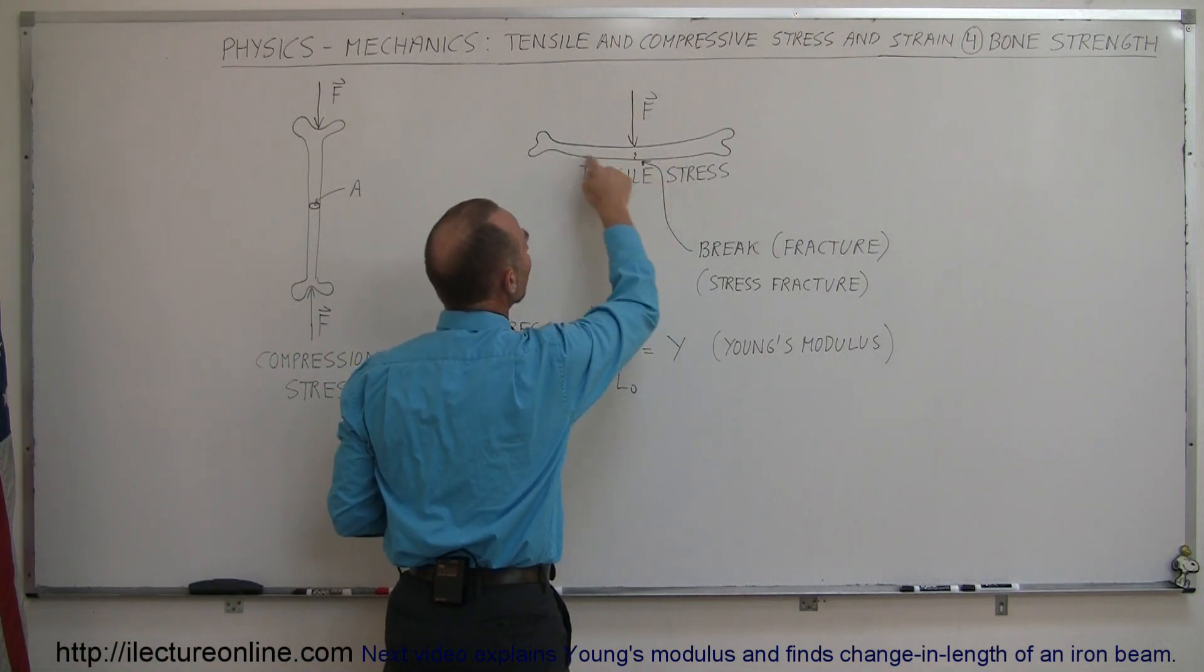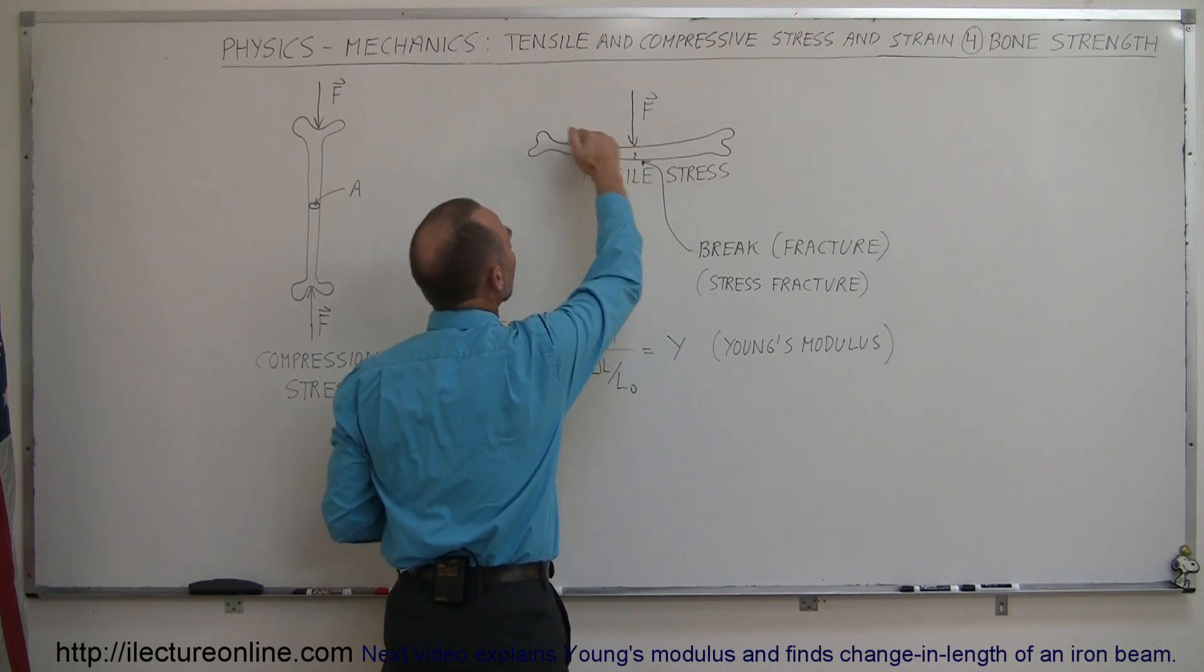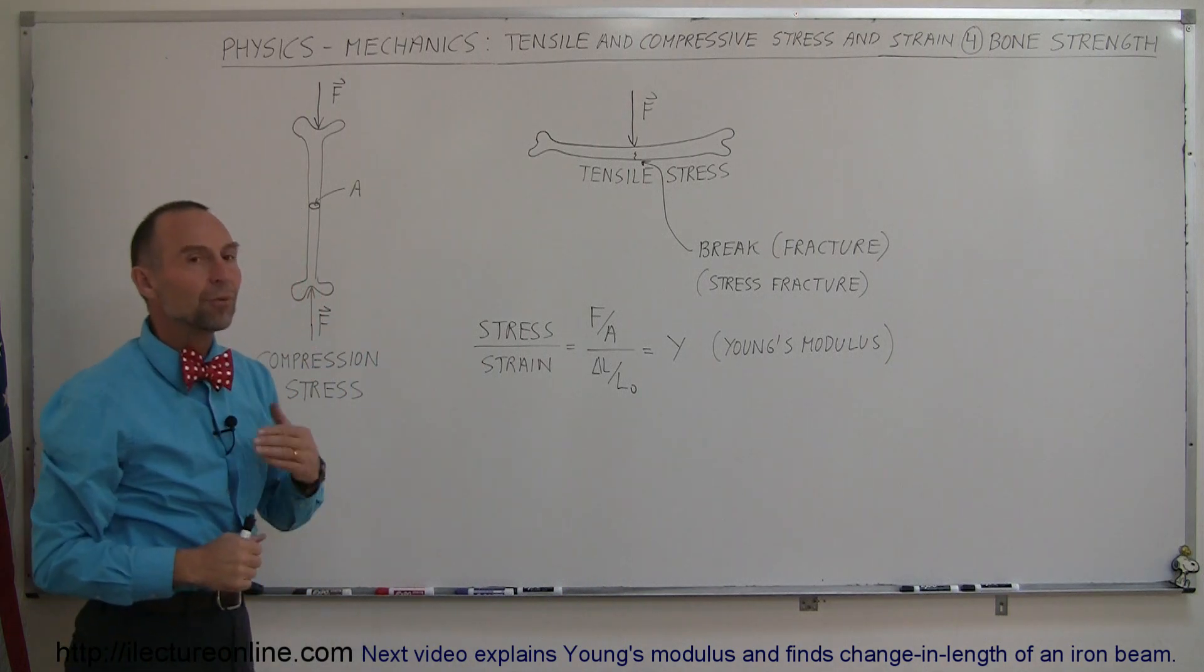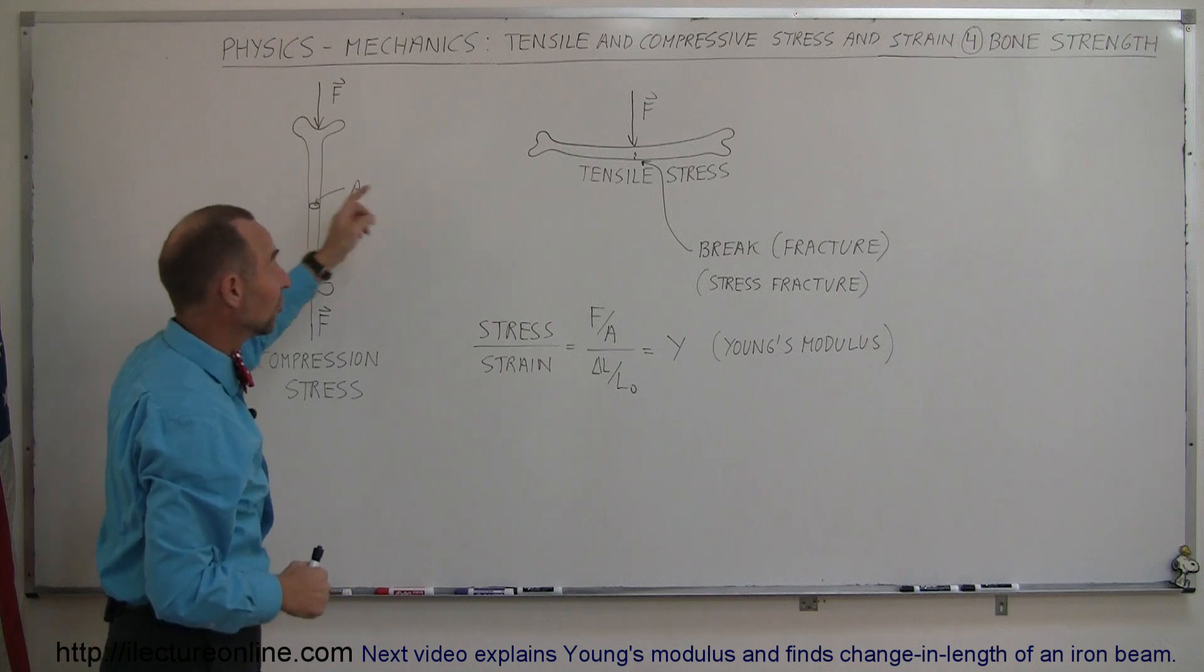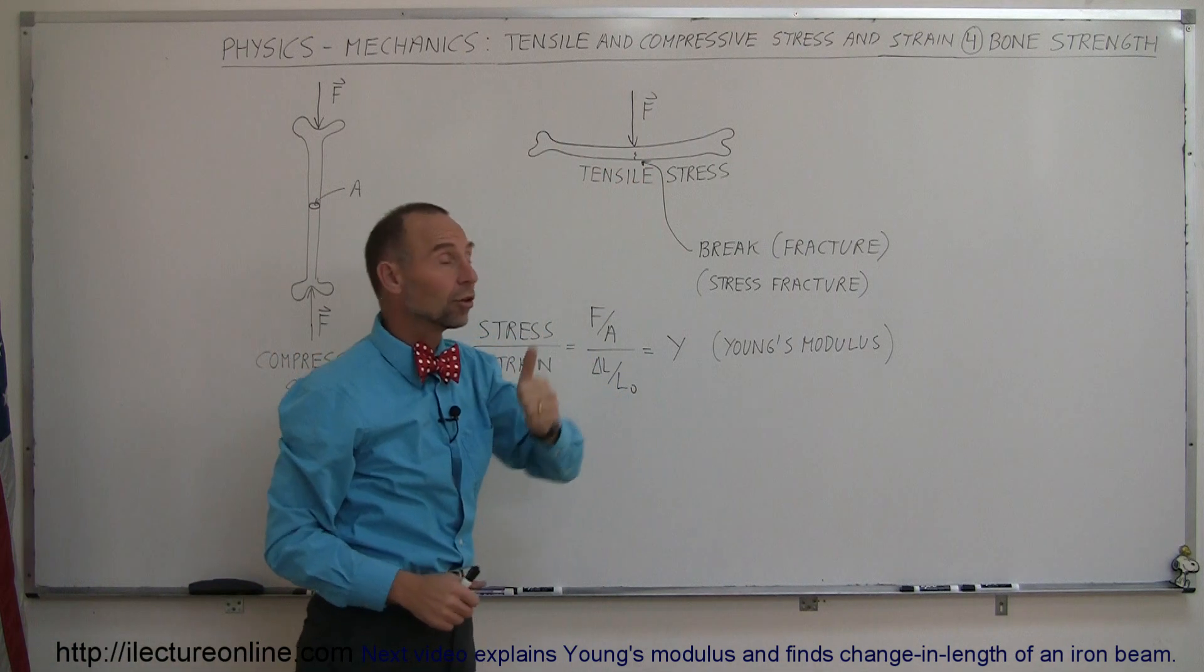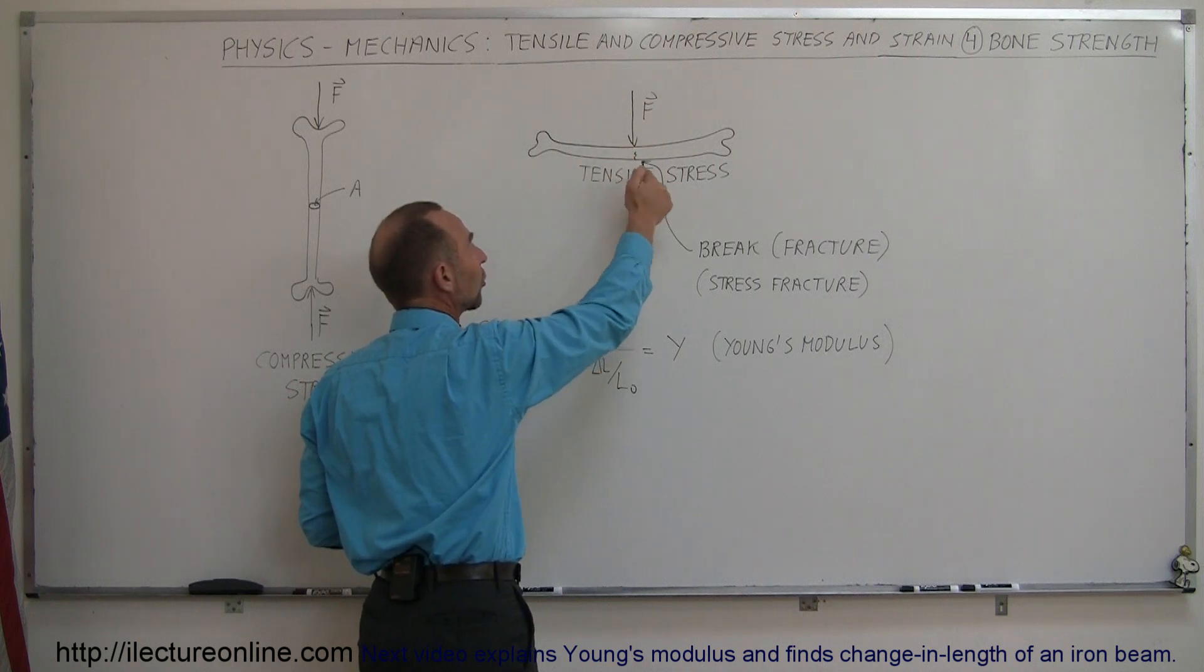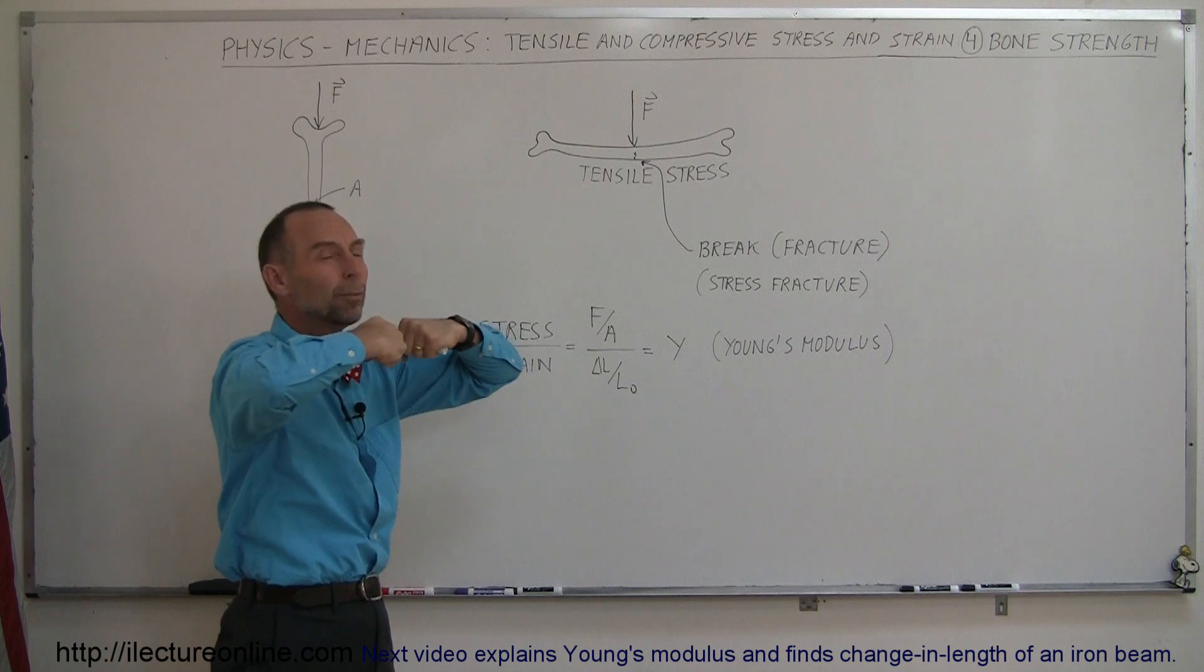Notice that the bottom end of the bone is going to be under tensile stress while the top portion of the bone is going to be under compressive stress. Now the bone is very good at withstanding compressive stress so the top portion is in good shape, but the bottom portion where the force occurs is going to be under tensile stress so the bone molecules are being pulled apart.